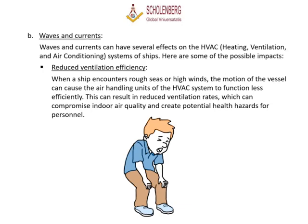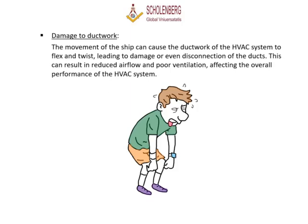B. Waves and currents can have several effects on the HVAC systems of ships. Reduced Ventilation Efficiency: When a ship encounters rough seas or high winds, the motion of the vessel can cause the air handling units of the HVAC system to function less efficiently, resulting in reduced ventilation rates, which can compromise indoor air quality and create potential health hazards for personnel. Damage to ductwork: The movement of the ship can cause the ductwork of the HVAC system to flex and twist, leading to damage or even disconnection of the ducts, resulting in reduced airflow and poor ventilation.